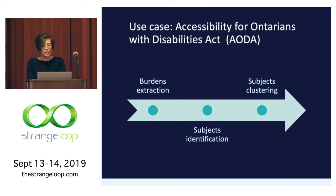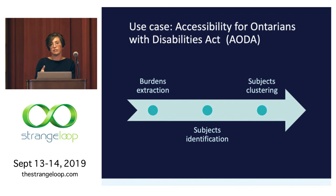In this context, what we're interested in is burdens. A burden is a requirement or an obligation that organizations have to comply with. In the context of accessibility, this can be a physical or architectural barrier — stairs, ramps, and physical obstacles to accessibility — but it can also refer to documentation and training. We'll split the analysis into three stages: first, identify the burden; second, identify the subjects of the sentences; and third, run clustering on the subjects to find regularities and explain what the law is requiring.